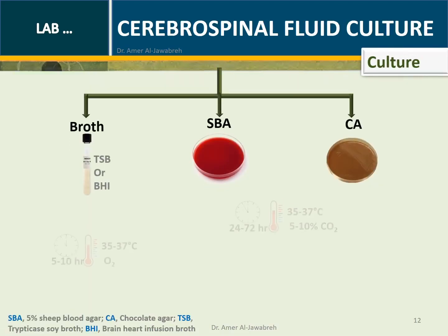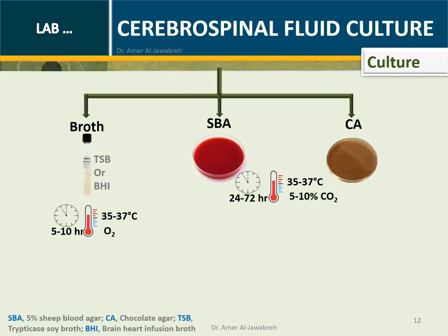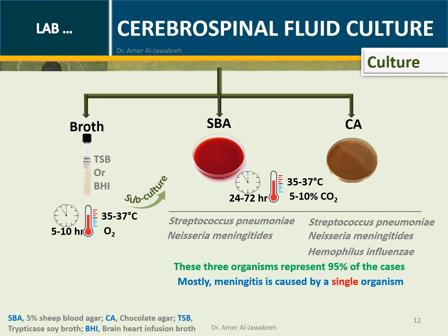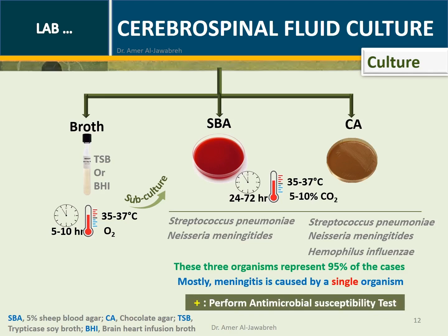For culture, part of the 0.5 ml sediment is plated on sheep blood agar (SBA) or chocolate agar and incubated as shown. One drop is put into broth and incubated, then subcultured on SBA and chocolate agar. On SBA, we mostly expect Streptococcus pneumoniae or Neisseria meningitidis. On chocolate agar, we additionally expect Haemophilus influenzae. These three organisms represent 95% of cases. Meningitis is mostly caused by a single organism. If culture is positive, perform antimicrobial susceptibility testing.